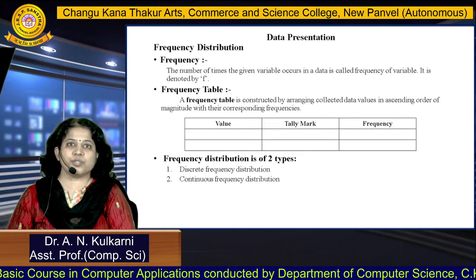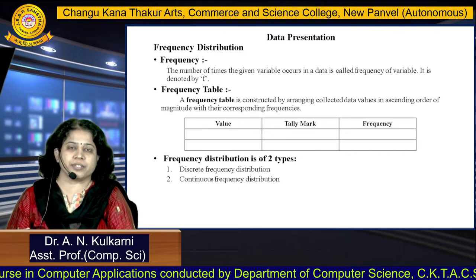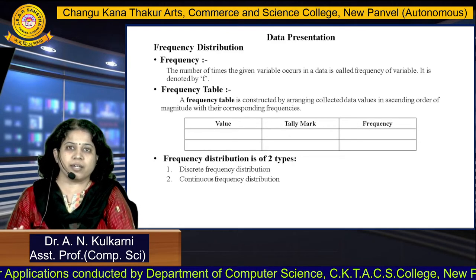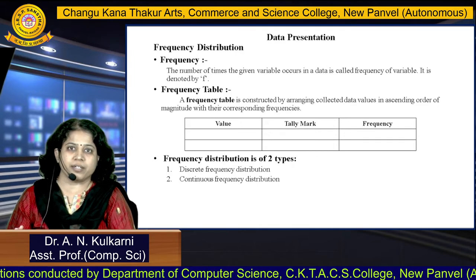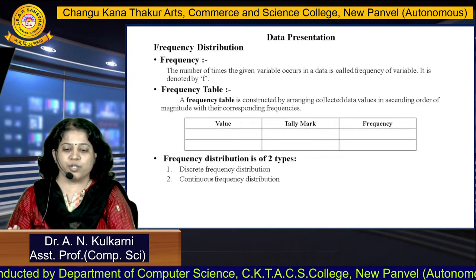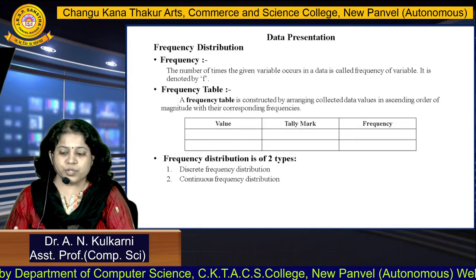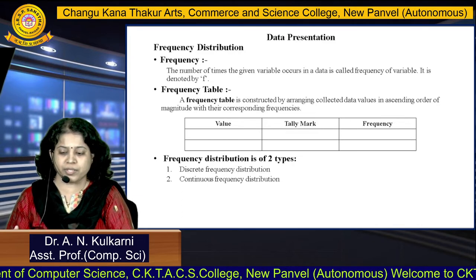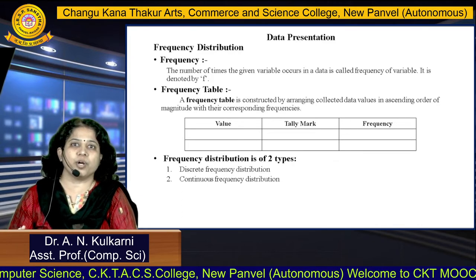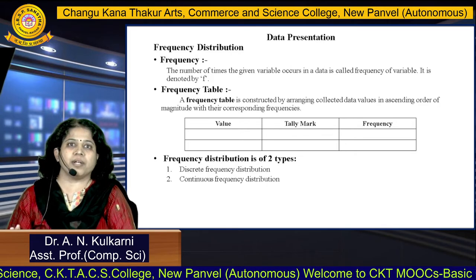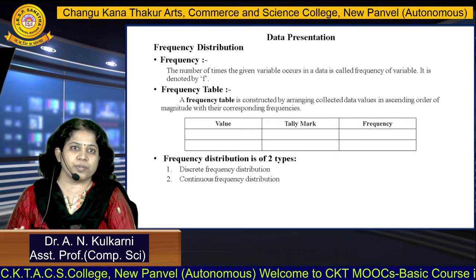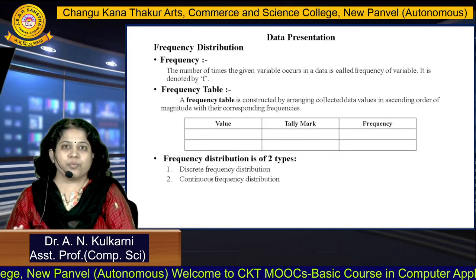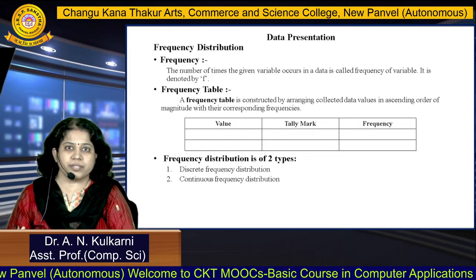Next is data presentation. Previously we have seen what is data and the categories of data. Now we have to present data. For that, first we need frequency distribution. Frequency is the number of times a given variable occurs in a dataset — it is called the frequency of the variable and is denoted by F. For that, we can construct a frequency table.